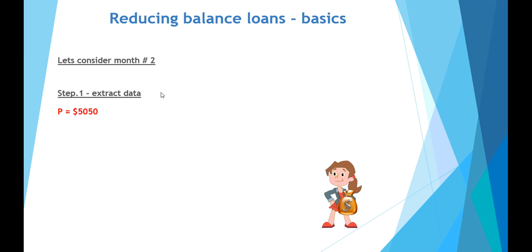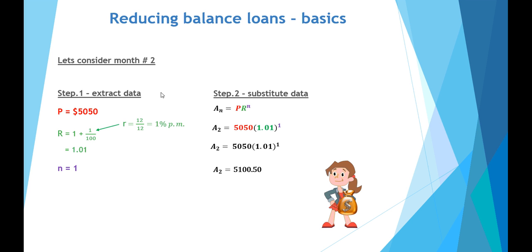In the second month, Molly starts with a debt of $5,050. The same growth factor applies, and again for one more month. When we put this into our equation, we find that Molly's debt was $5,000 originally, $5,050 at the end of the first month, and at the end of the second month it's now $5,100.50.